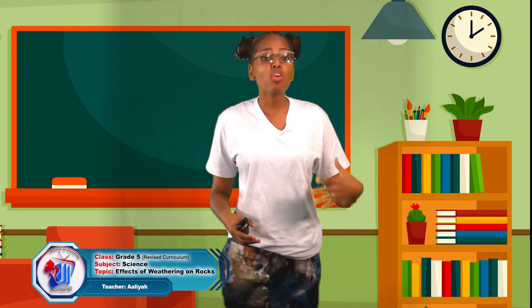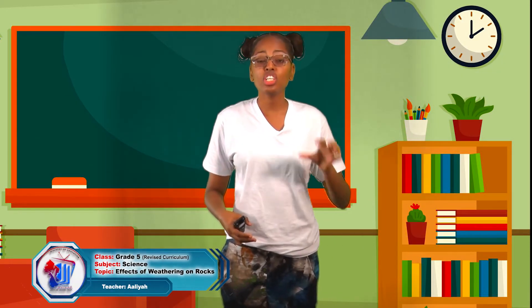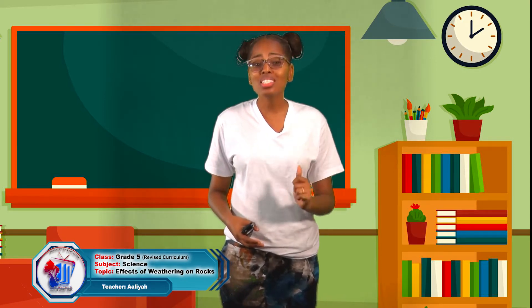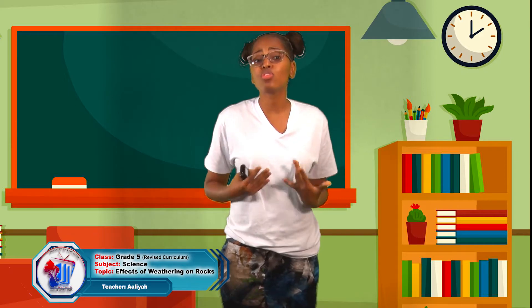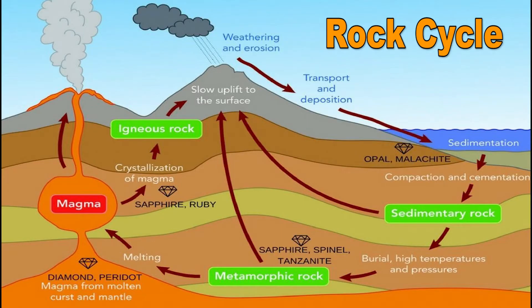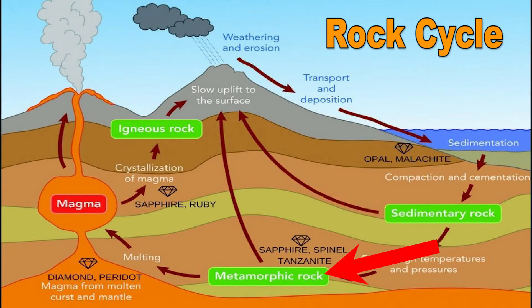Did you know that rocks can change their shape, size, and grain over the course of many years? Rocks are constantly changing in what is called the rock cycle. It takes millions of years for rock to change. Here is an example of the rock cycle describing how rocks can change from igneous to sedimentary to metamorphic over time.